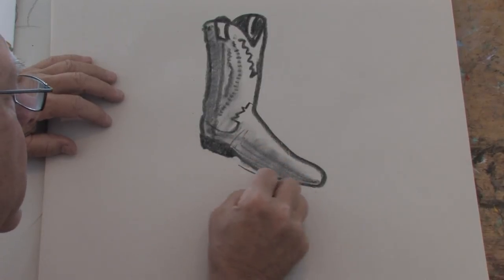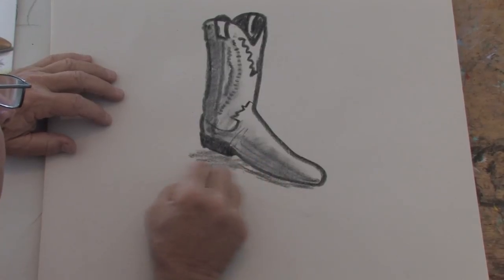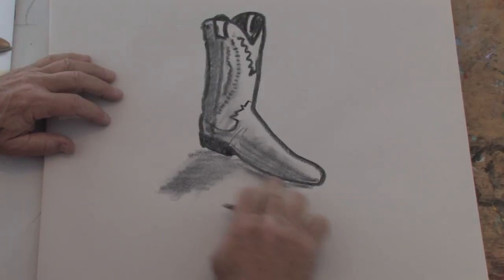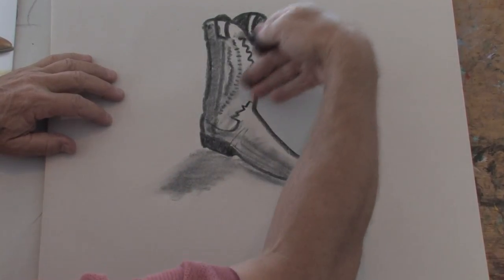We can even put a little shadow that the boot is casting off to the side here like this. And I put the shadow on this side because the light's coming from that side.